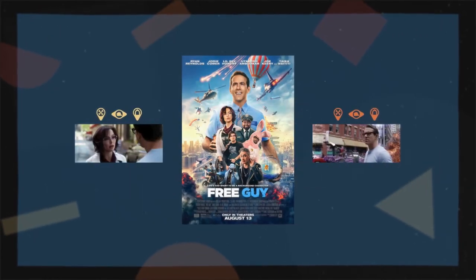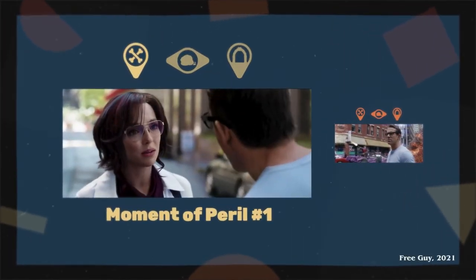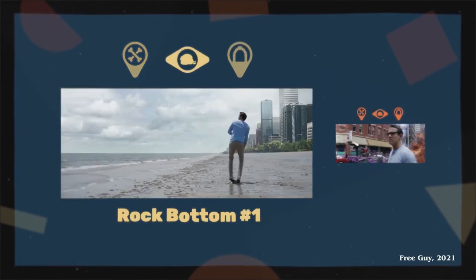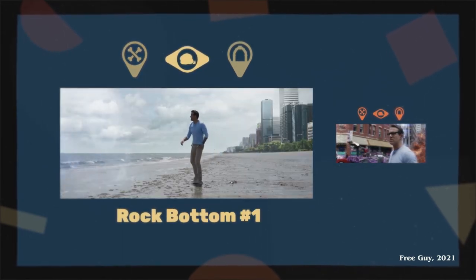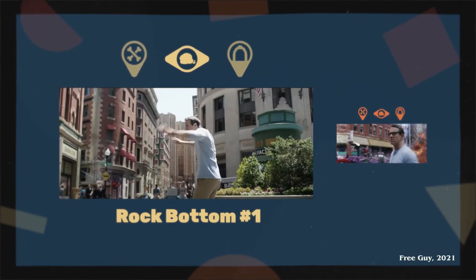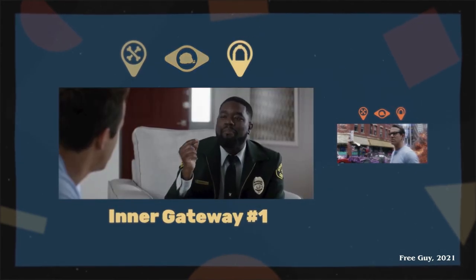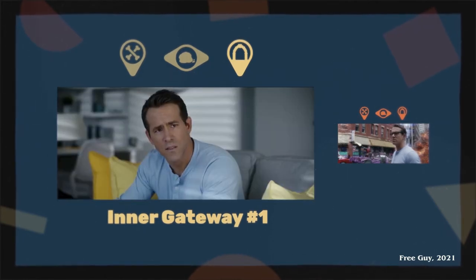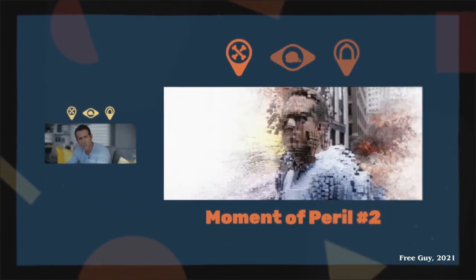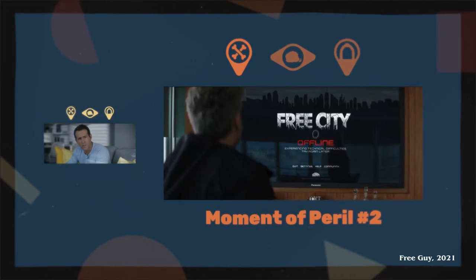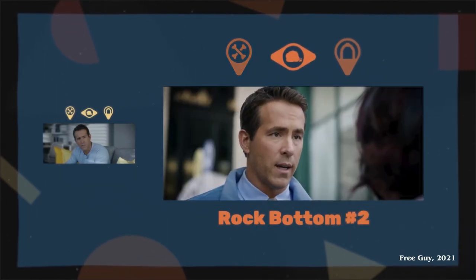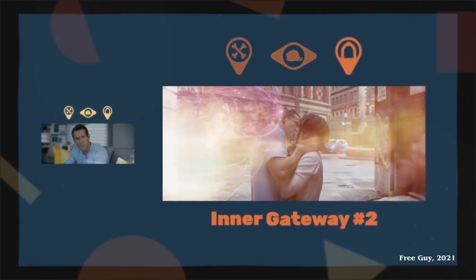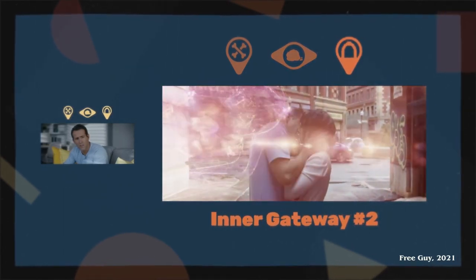But in Free Guy, this section happens twice. First, in the moment of peril, Millie tells Guy he's a background character and his actions don't matter. Guy spends his rock bottom throwing — you guessed it — literal rocks through the edge of his world and screaming in the streets. And in the inner gateway, Guy talks to Buddy, who helps him realize his actions do matter, even if he's just an NPC. Then, in the second moment of peril, the game's servers get rebooted. The second rock bottom shows Guy has forgotten who Millie is and won't be able to help her. But in the second inner gateway, Millie kisses Guy, re-sparking his memories and bringing Guy back.